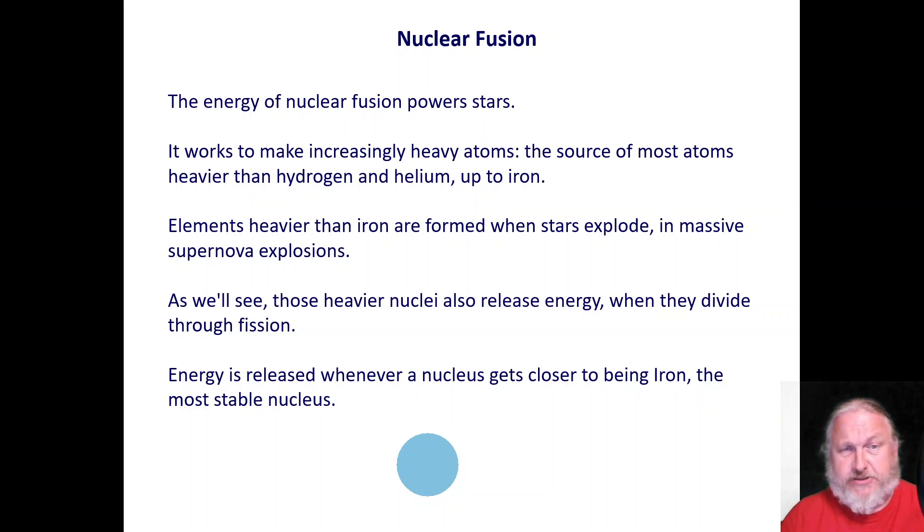Now recall from our first lecture, elements heavier than iron are formed when stars explode in massive supernova explosions. These heavier nuclei also release energy when they divide through fission and they overcome the binding energy. So energy is released whenever a nucleus gets closer to being iron, the most stable nucleus.